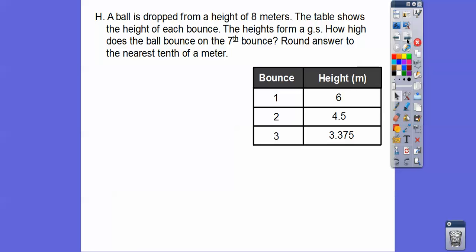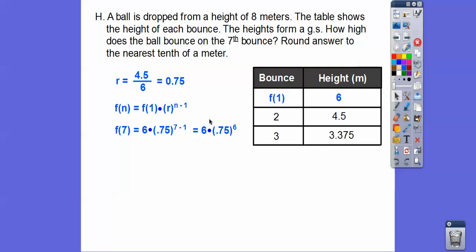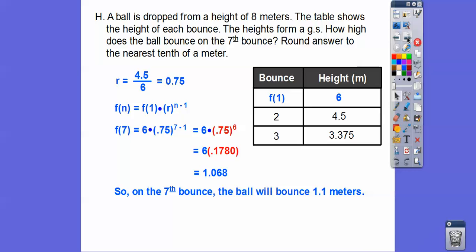Let's try another one. A ball is dropped from a height of 8 meters; the table shows the height of each bounce. The heights form a geometric sequence. How high does the ball bounce on the seventh bounce? Round the answer to the nearest tenth of a meter. We've got to find R — righty divided by lefty gives 0.75. The first term is 6. So F(7) equals 6 times 0.75 to the 7 minus 1 power, which is the sixth power. Then 0.75 to the sixth times 6, rounded to the nearest tenth, gives 1.1 meters.